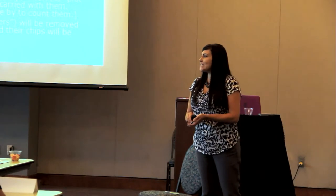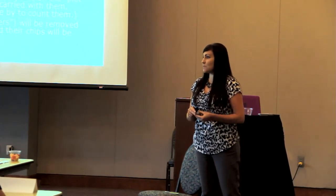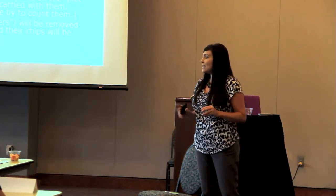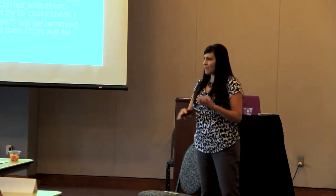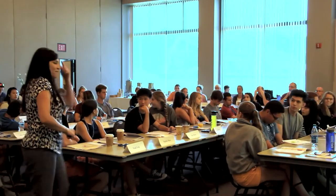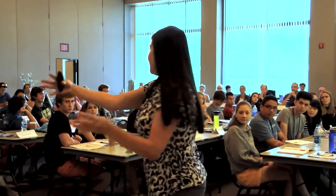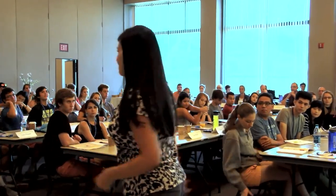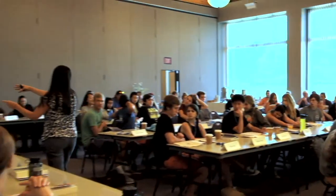Number students off one through twelve, then tell each family where they will be positioned. For example, family number one will be right over here, family number two in this back corner, family three around this table, and so on.